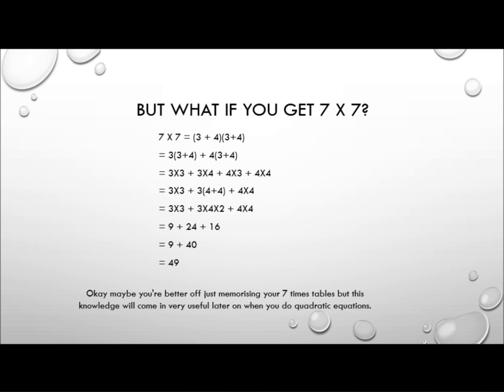If we didn't know that 24 plus 16 is 40, we could use the associative property: that's the same as 20 plus 4 plus 10 plus 6. Using the commutative property, we can rearrange to 20 plus 10 plus 4 plus 6. And 4 plus 6 is 10, so we've got 20 plus 10 plus 10, which is 20 plus 20, which is 40. Then we remember to add the 9, giving us 49. So 7 times 7 is 49.